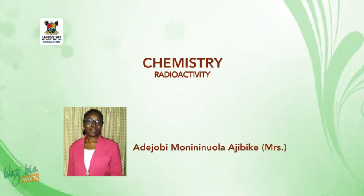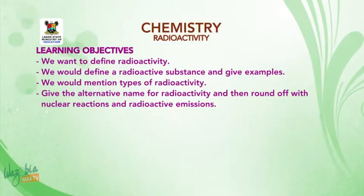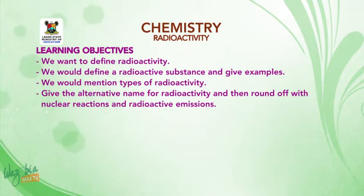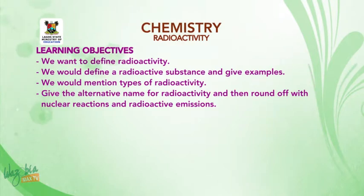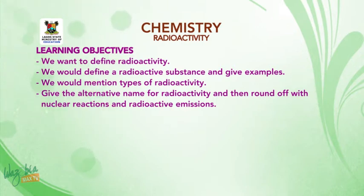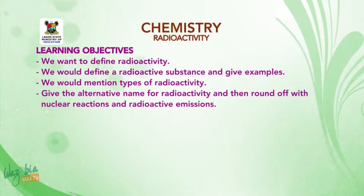Let me go through the objectives for this first segment of this lesson. We want to define radioactivity, define a radioactive substance and give examples, mention types of radioactivity, give the alternative name for radioactivity, and then round up with nuclear reactions and radioactive emissions.